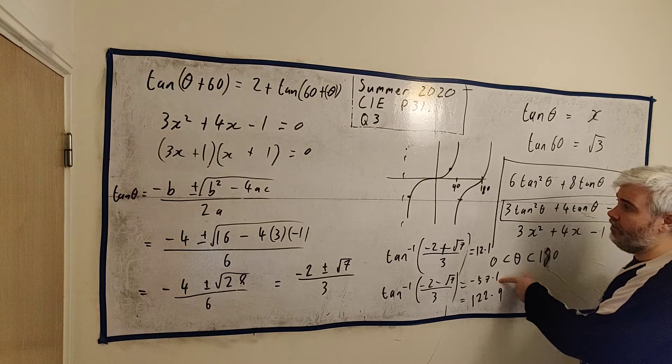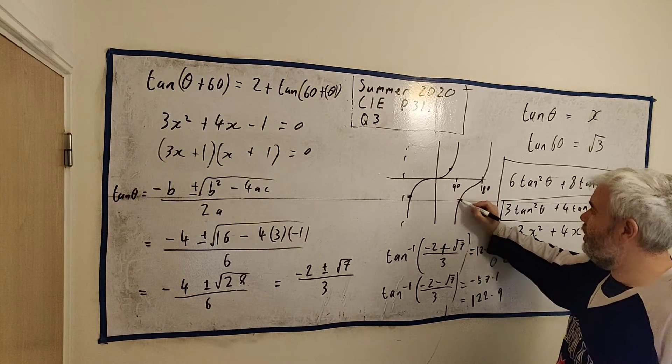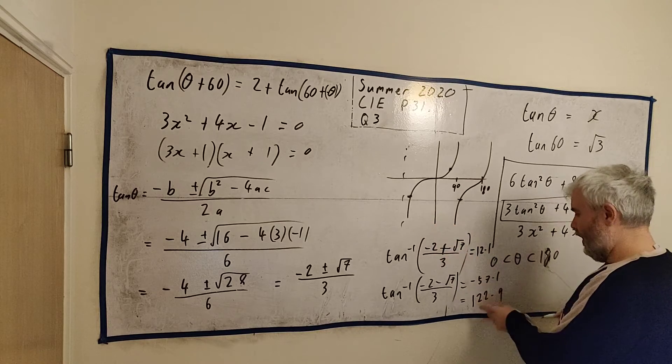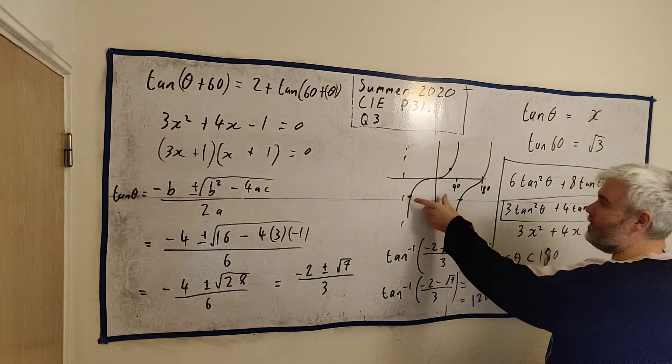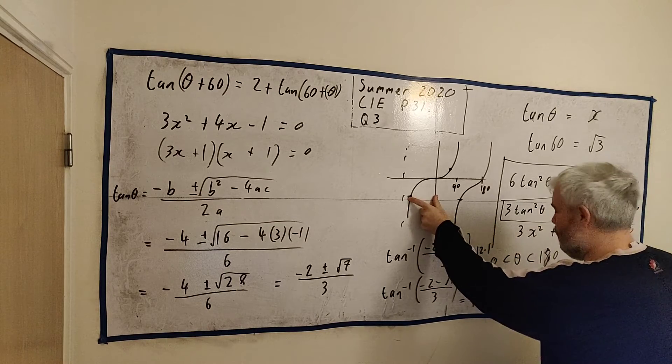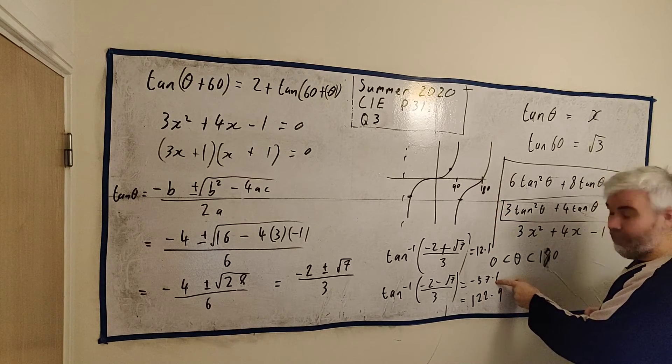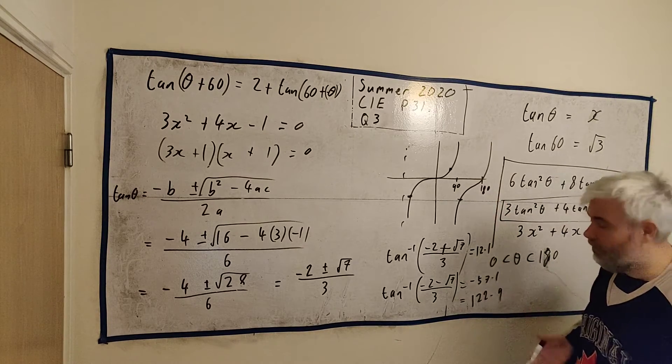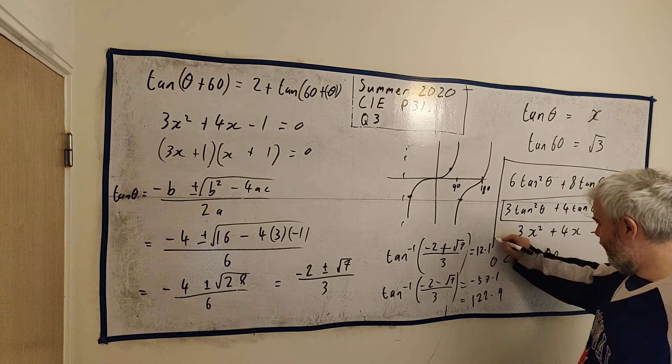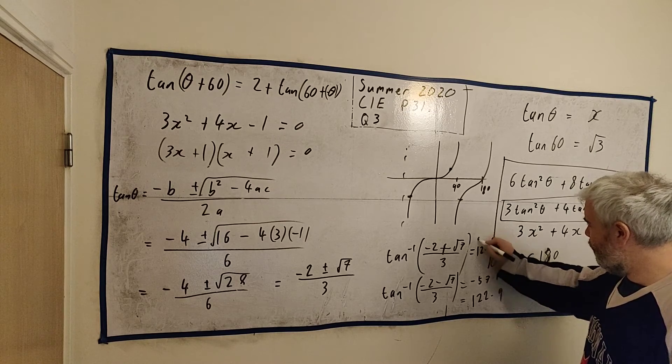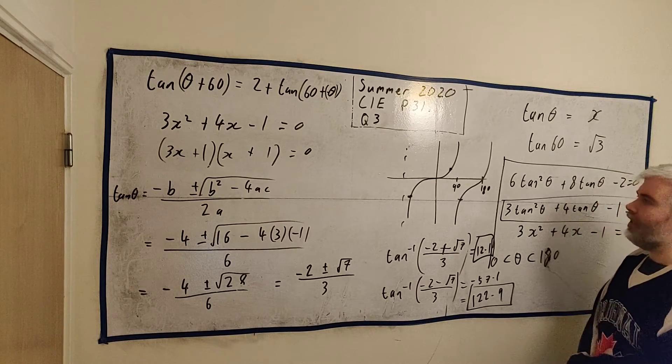If you do get this answer, it's just telling you this number here. That's fine, because to get from there to there, that's -57.1 from there. So it must be -57.1 from 180. So just take this number from 180, you will get this number. It's the same thing. And we do that a lot in maths. Hopefully that's clear. There's my two answers: 12.1 and 122.9.